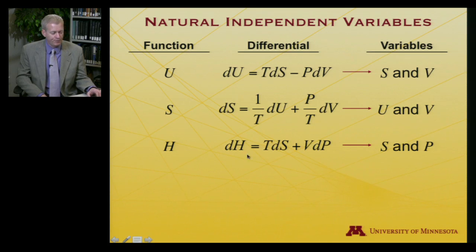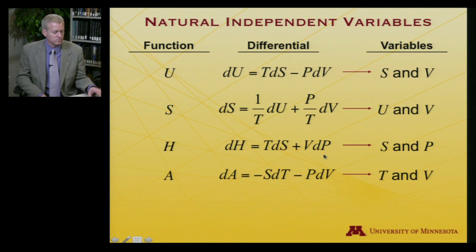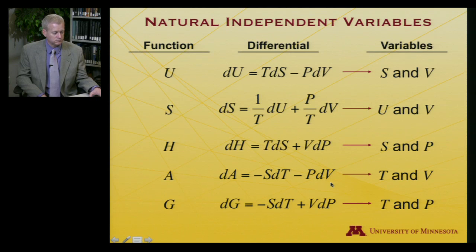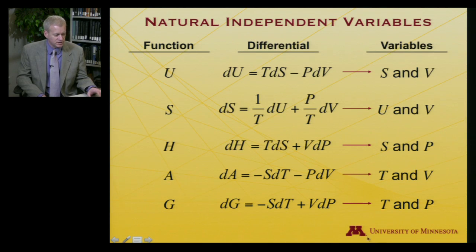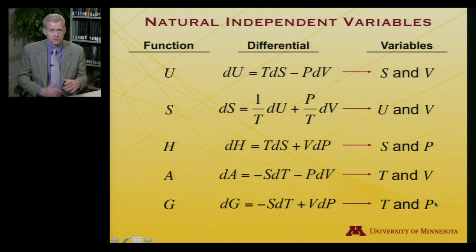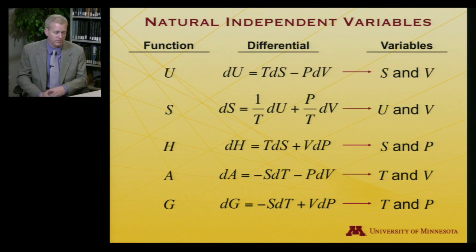For the Helmholtz free energy, the natural variables are T and V, and for the Gibbs free energy, T and P. Maybe these aren't so surprising — we use these free energies when those quantities are being held constant. So that's another way to remember what the natural independent variables are.